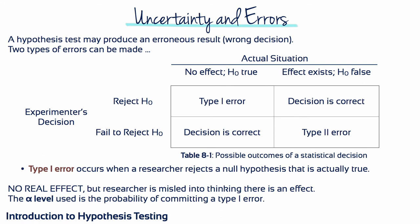A hypothesis test may produce an erroneous result. Two types of errors can be made. A type 1 error occurs when a researcher rejects a null hypothesis that's actually true — in other words, there's no real effect, nothing happened, but the researcher is misled into thinking that there is an effect. The alpha level that we choose is the probability of committing a type 1 error. Remember, samples are not expected to be identical to their populations, and some extreme samples can be very different from the populations they're supposed to represent. If a researcher selects one of these extreme samples by chance, the data may give the appearance of a strong treatment effect even though there's no real effect.